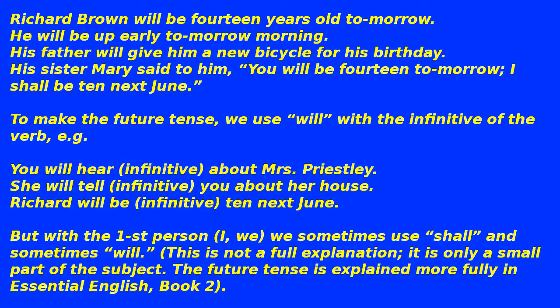To make the future tense we use 'will' with the infinitive of the verb. E.g.: 'You will hear' (infinitive) about Mrs. Priestley; 'She will tell' (infinitive) you about her house; 'Richard will be' (infinitive) 10 next June. But with the first person I/we, we sometimes use 'shall' and sometimes 'will'. This is not a full explanation — it is only a small part of the subject. The future tense is explained more fully in Essential English Book 2.